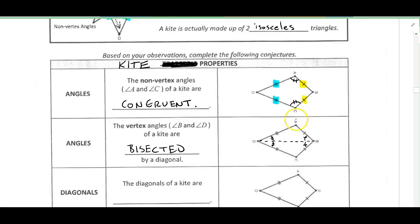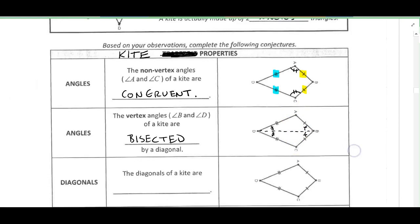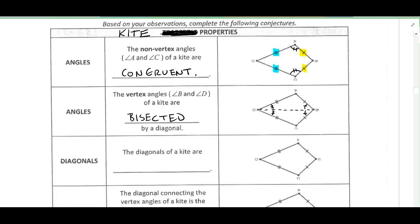Now this isn't true for the other diagonal, AC. AC does not bisect, or the diagonal going from A to C does not bisect angle A or angle C, so you have to be careful with that. Only one of the diagonals bisects the angles, and it bisects the vertex angles.